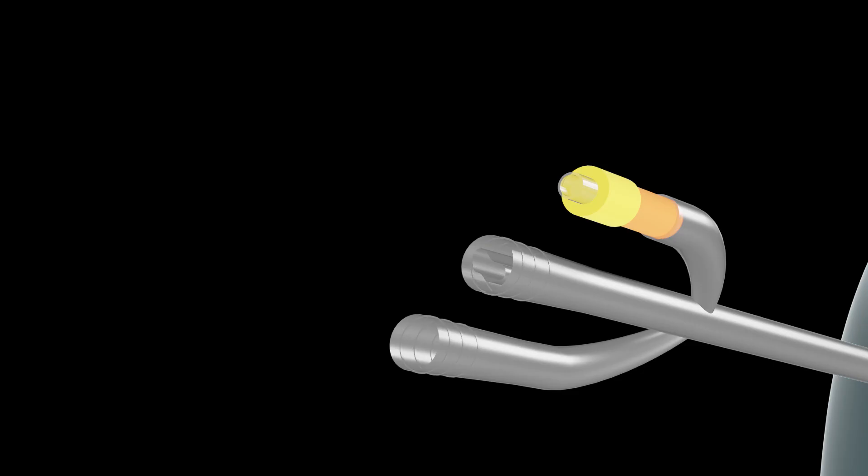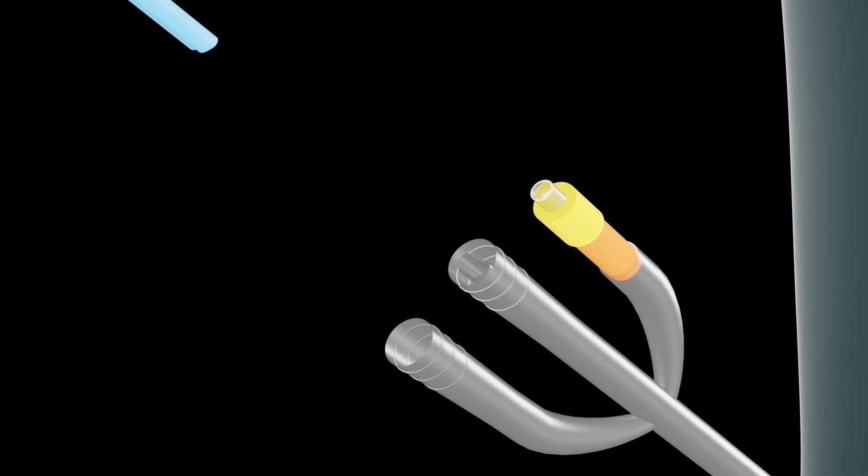The catheter has a keyed lumen that corresponds to a groove along a separate sheath that is then inserted through the catheter.